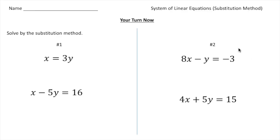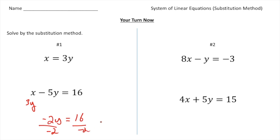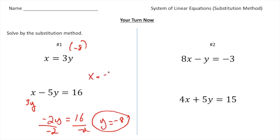Welcome back — let's see how you did. The first one had x equals 3y and x minus 5y equals 16. This is nice because we know what x equals — it's 3y. So substituting 3y for x: 3y minus 5y is negative 2y, equals 16. Dividing both sides by negative 2, y equals negative 8. Then to solve for x, replace y with negative 8, which means x equals negative 24. So the solution should have been negative 24 and negative 8.